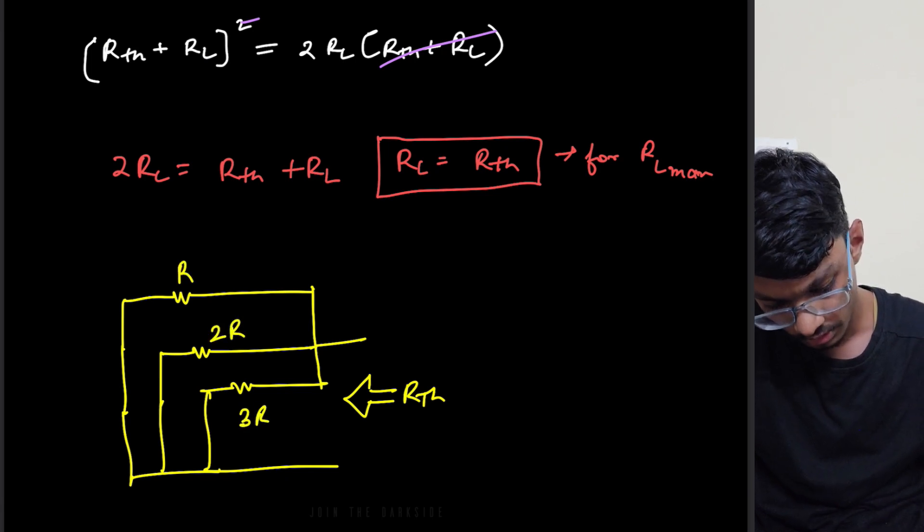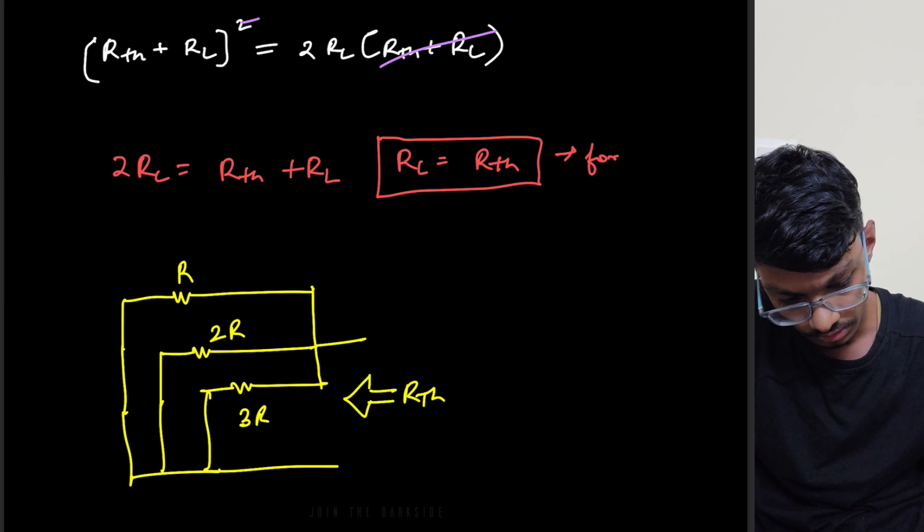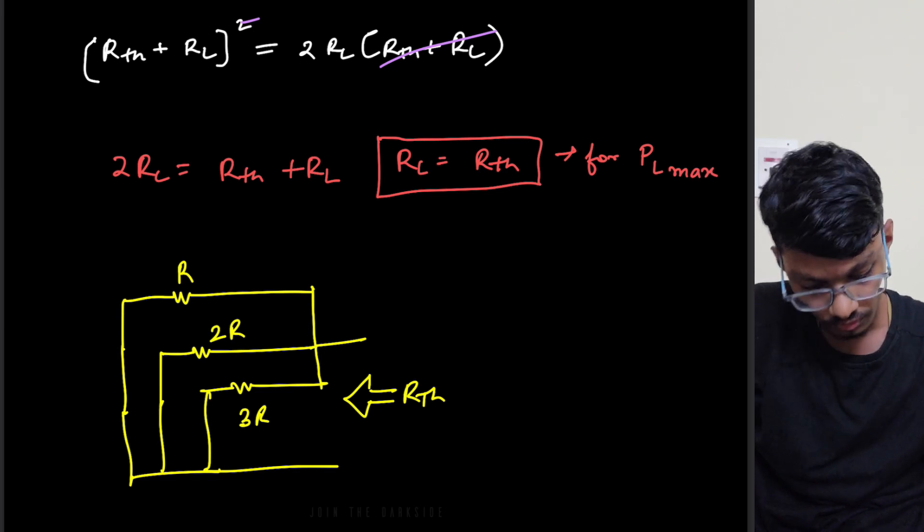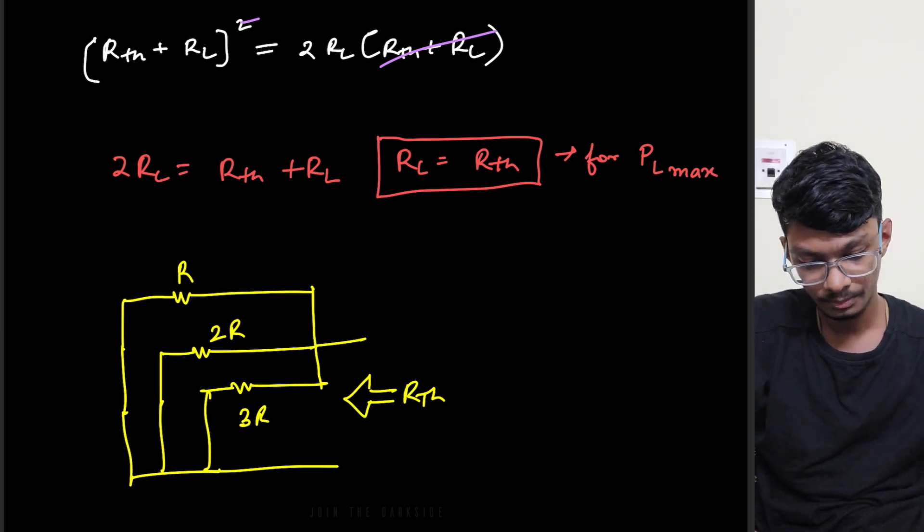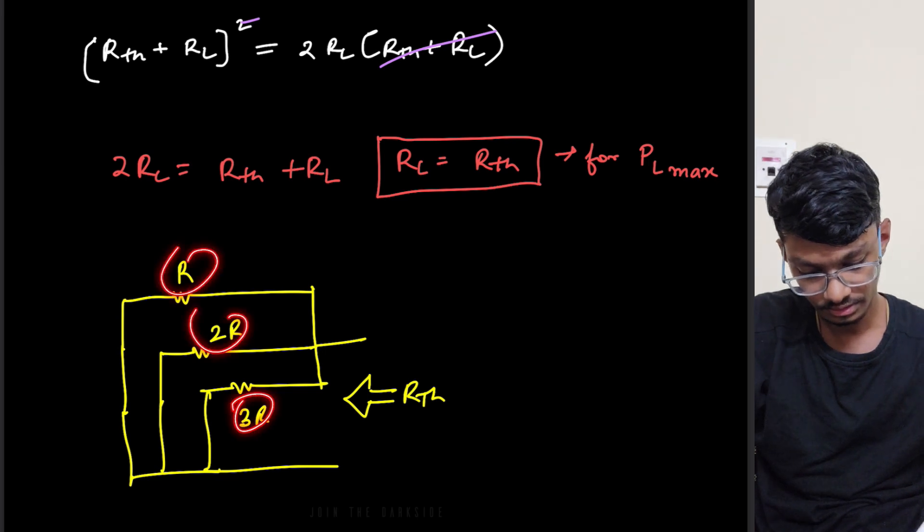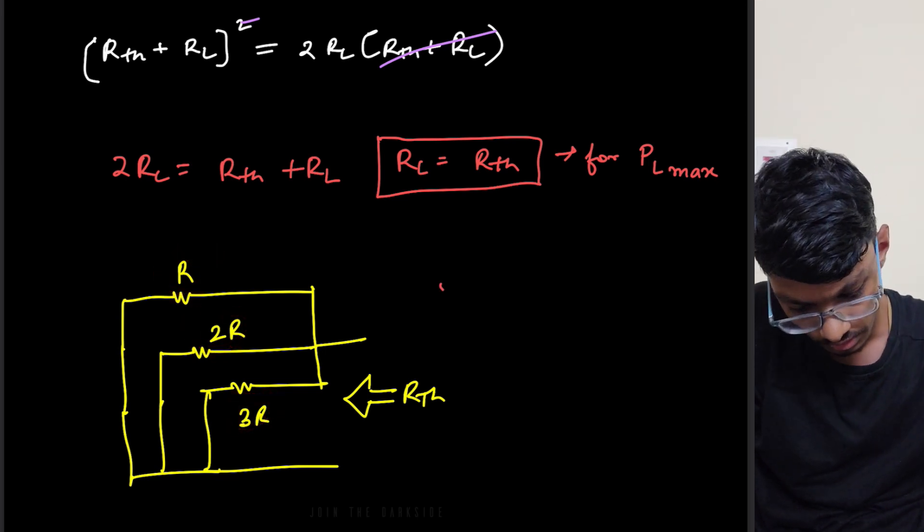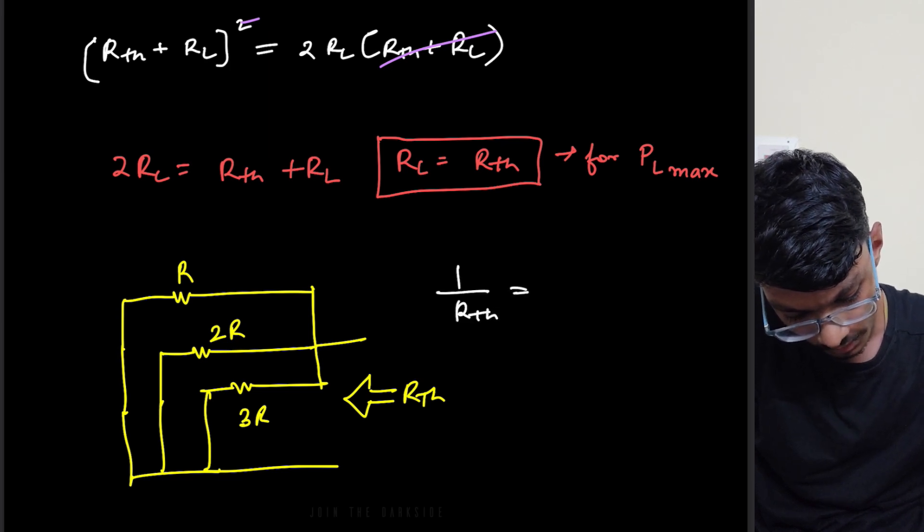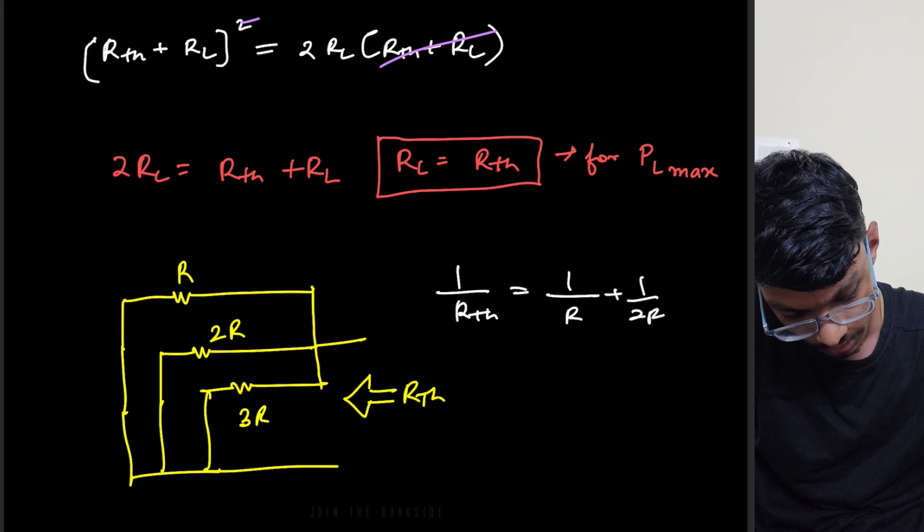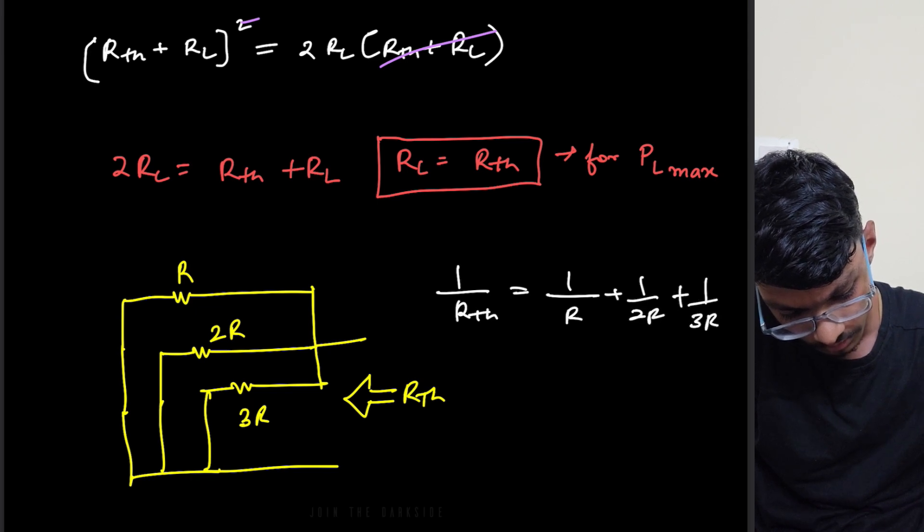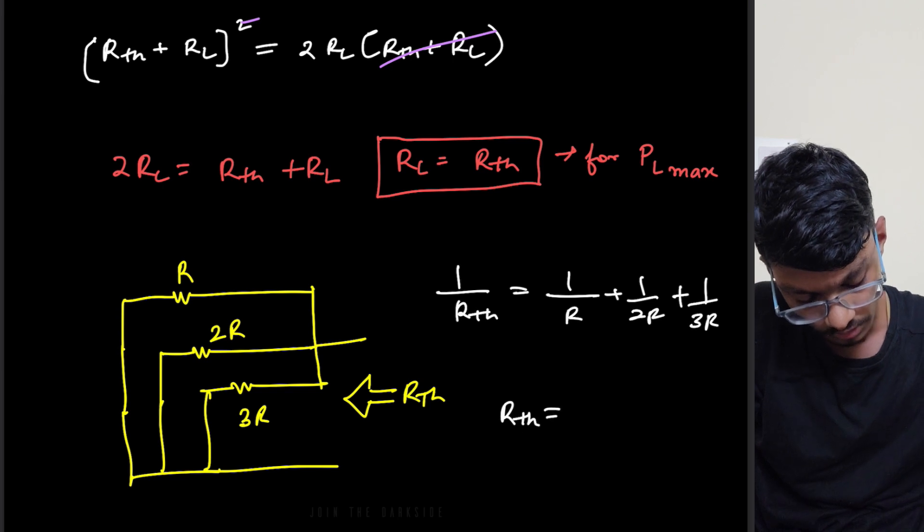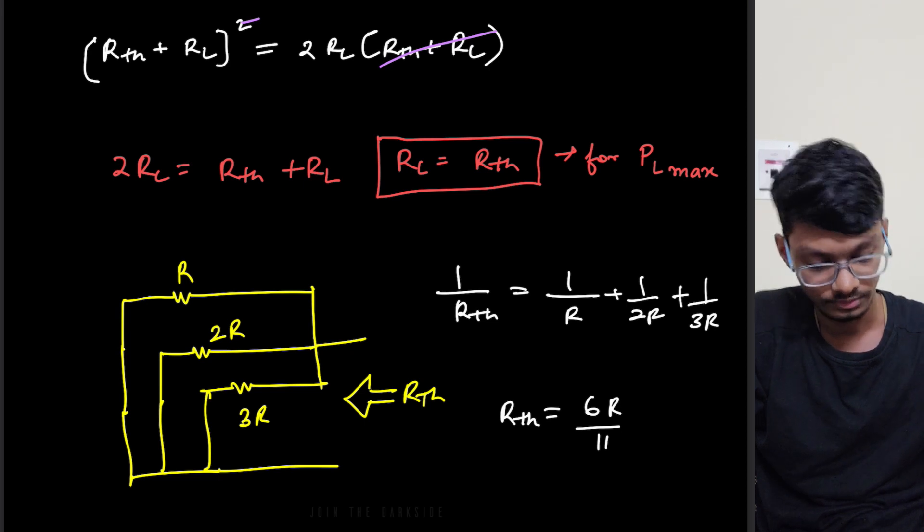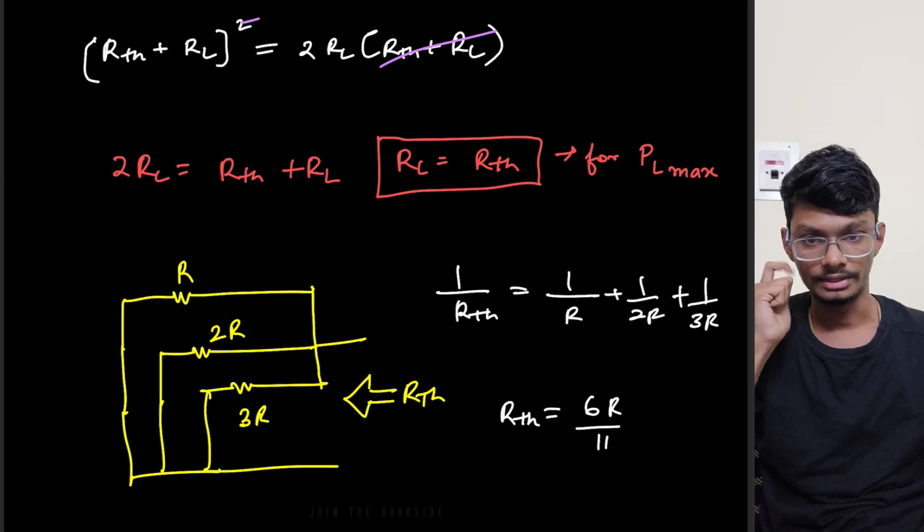So what is the Rth? This is 3R, 2R, and R. So what is the Rth? Basically it's a parallel combination of these three resistors. Parallel combination, so 1 by Rth equals to 1 by R plus 1 by 2R plus 1 by 3R. So Rth equals to 6R by 11. So this is basically the Rth.